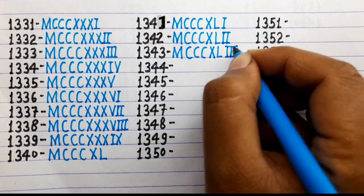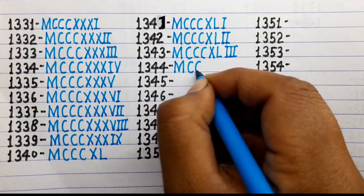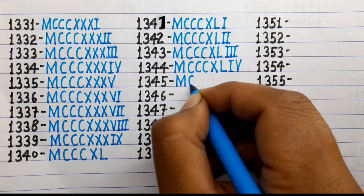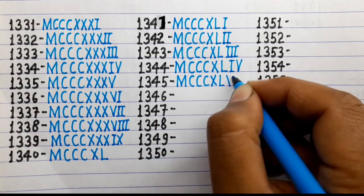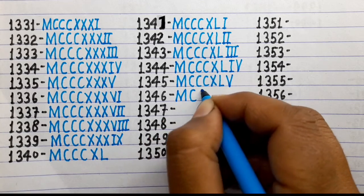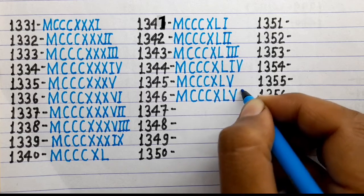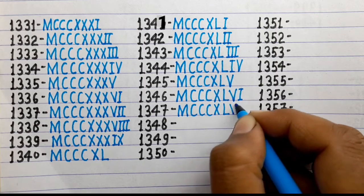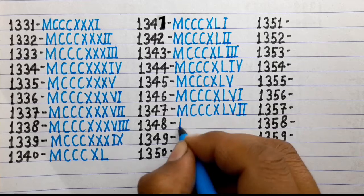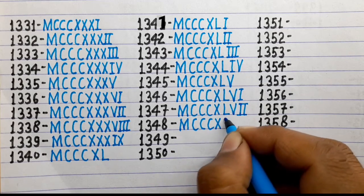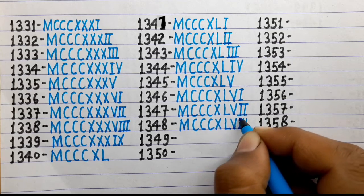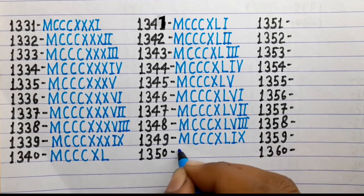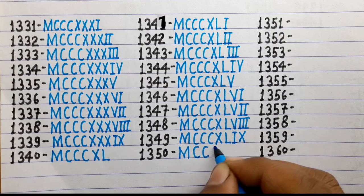1344 is MCCCXLIV. 1345 is MCCCXLV. 1346 is MCCCXLVI. 1347 is MCCCXLVII. 1348 is MCCCXLVIII. 1349 is MCCCXLIX. 1350 is MCCCCL.